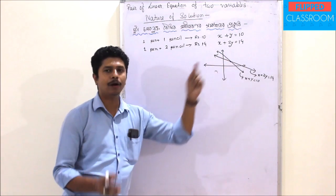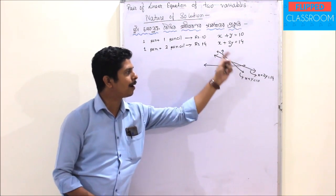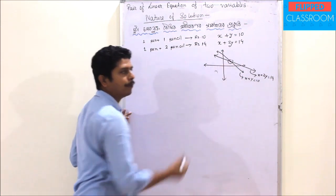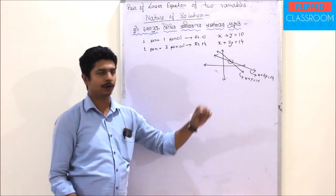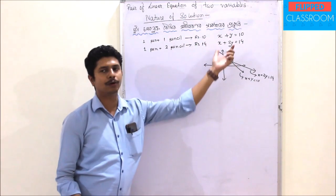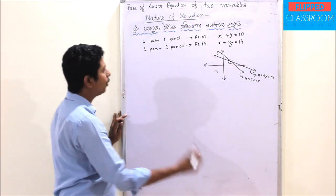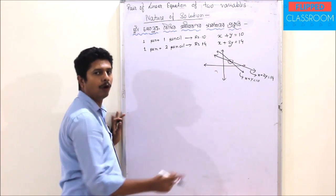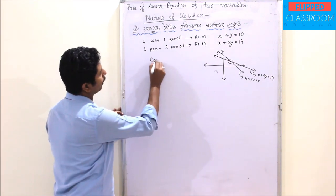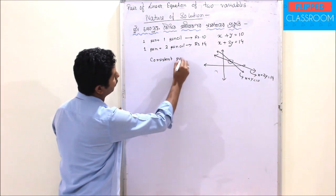We have a common point. The common point is a common point — when we say the common point is the common point. And then we say x to x, y to y. So our common point is the common point.